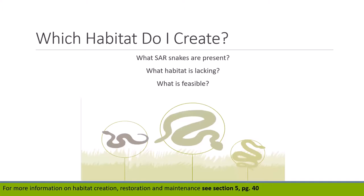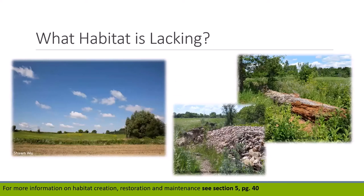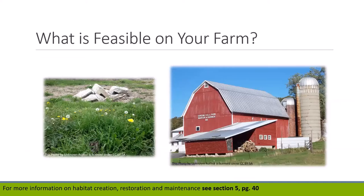When choosing habitat to create on your property, ask: what species at risk snakes are present or known to be in the area, do they have any specific requirements, what habitat is lacking, and what is feasible? It is ideal that an initial survey be conducted by experts for all habitat types to assess which are or are not present. Habitat types to survey include hibernation locations, basking rocks, edge habitat, and microhabitat features. Think about what is possible to do on your property with your available resources.